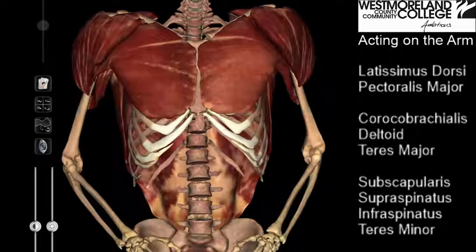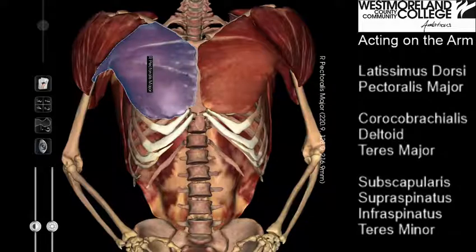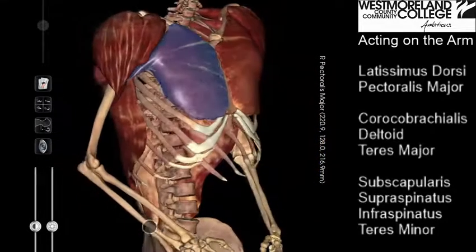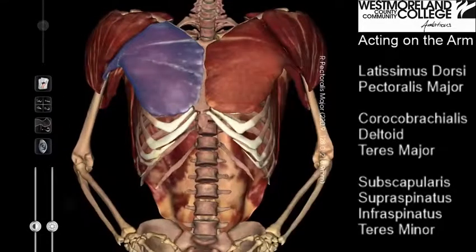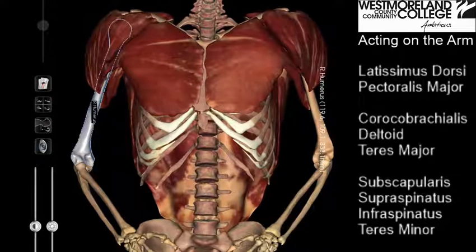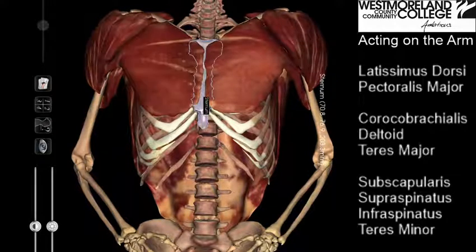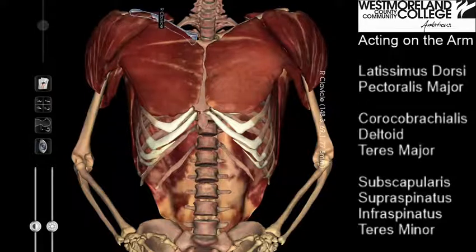Looking at the anterior view, we can see the pectoralis major, which inserts on the humerus but then has a broad origin from the sternum to the clavicle.